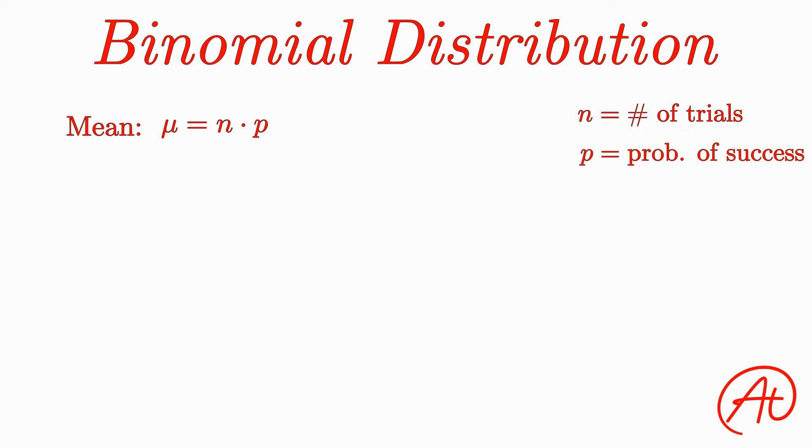Next, the standard deviation is also pretty straightforward. Sigma equals the square root of n times p times (1 minus p). Or you might also see it as the square root of n times p times q, where q equals 1 minus p, aka the probability of failure, since there are only two outcomes for a trial.